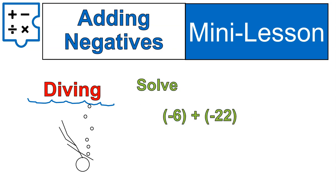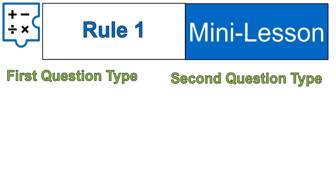Let's do another one. Negative 6 plus negative 22 — try that one out. Pause the recording and come on back. Welcome back. Did you do it, or did you just keep watching? I keep getting comments from people saying they just keep watching. Anyway, if you did that and got negative 28, that's correct. If you didn't do it, there's the answer for you.